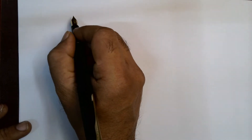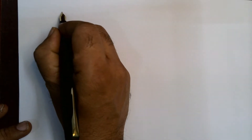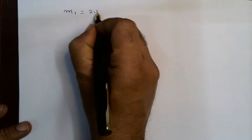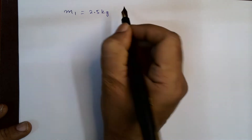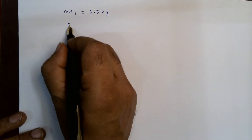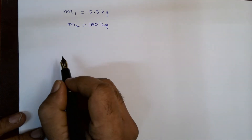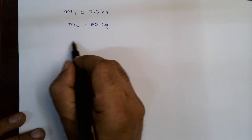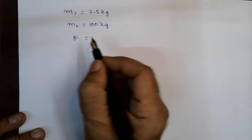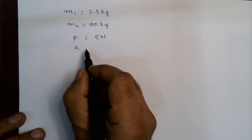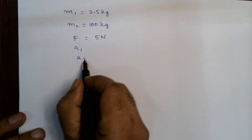If two objects of masses 2.5 kg — let me consider M1 as 2.5 kg — and another mass M2 as 100 kg, they experience a force of 5 Newton. What is the acceleration experienced by each of them? That is A1 and A2.